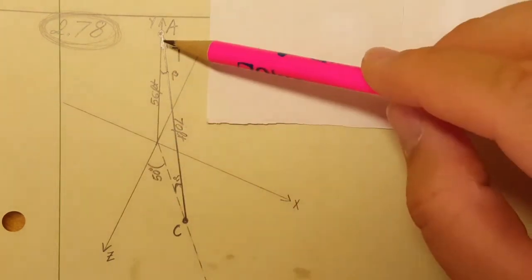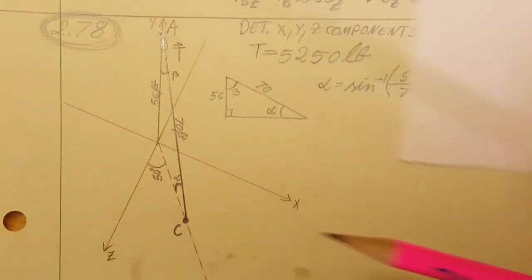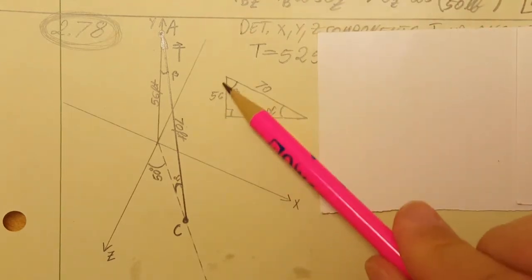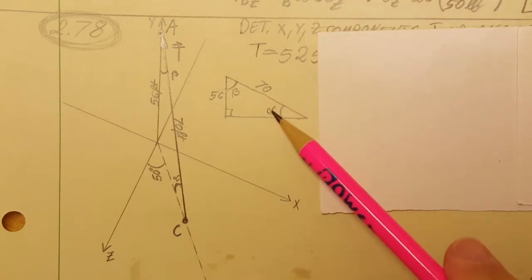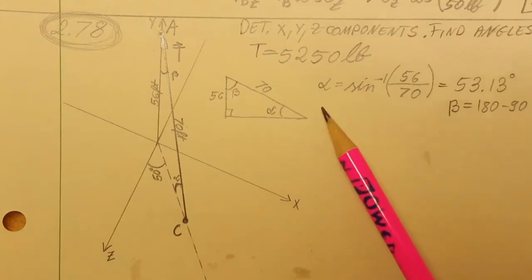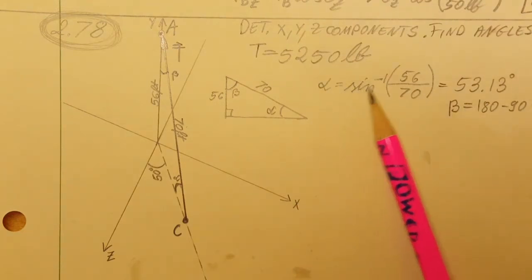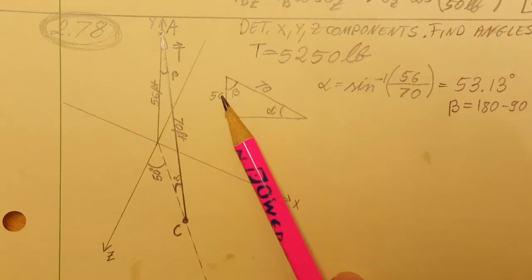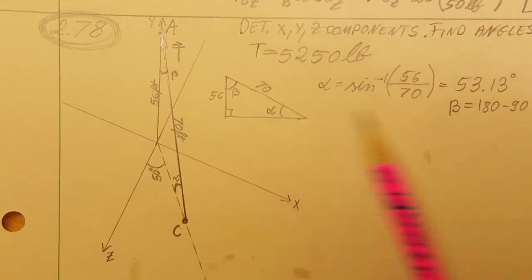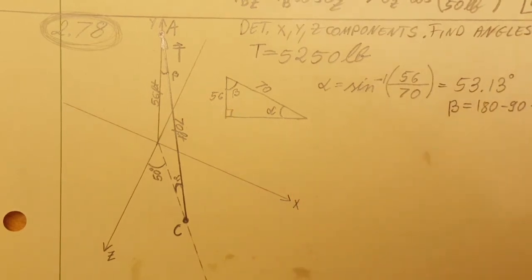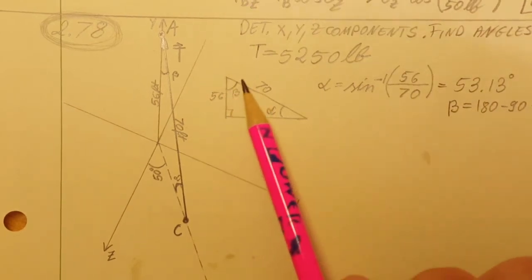First, I'm going to redraw this triangle that I'm working with right here, and I'll be able to calculate these two angles, alpha and beta. I used the inverse sine of 56 over 70, opposite over hypotenuse, which gave me 53 degrees. Then 180 minus 90 minus 53 gives me 36.87 degrees.